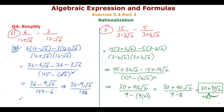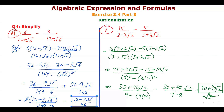Taking out a common factor of 3 from the numerator: 3 times 12 minus 3 under root 6, upon 138. Dividing numerator and denominator by 3 gives 12 minus 3 under root 6 upon 46. This is our final result. So students, we have completed question number 4 all parts of Exercise 3.4. If you have any questions, please tell us in the comment box. In the next video we will do the review exercise. Thank you so much for watching.